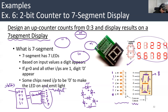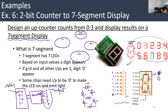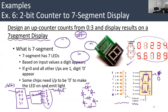When we want digit zero — by the way, this is zero, not eight — when state 00 means digit zero, we want all of them to be ones except G. So the output will be 1, 1, 1, 1, 1, 1, 0.